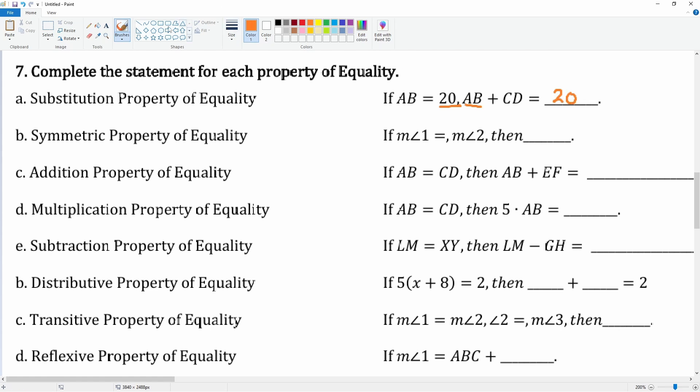Next, the symmetrical property. The symmetrical property is when you flip them. So here we may say that measurement of angle 2 is equal to the measurement of angle 1.